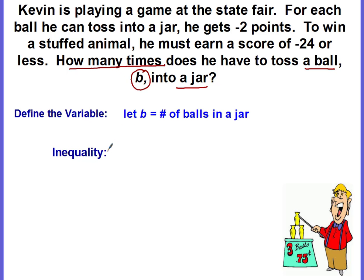And now we're ready to write our inequality statement. So go back through and look for those inequality clue words. Kevin is playing a game at the state fair. For each ball he can toss, he gets negative two points. To win a stuffed animal, he must earn a score of negative twenty four or less. Negative twenty four or less. That's our clue word for our inequality.